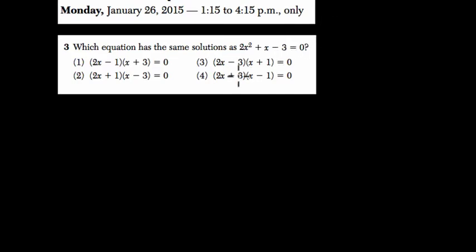They're asking you to factor this, really. They're saying, if we factor this trinomial into two binomials, which one of these would give the correct result? So here, when we factor, we have 2x squared plus x minus 3 equals 0.